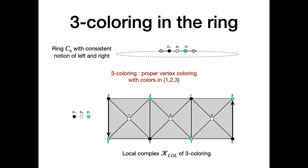We can do the same for tricoloring the ring. Assuming a consistent notion of left and right, tricoloring means properly coloring nodes with colors in {1, 2, 3}. The local complex of tricoloring has the property that if the center node is colored 1, its neighbors may have colors 2 or 3 — but not 1. Similarly, if the center node is colored 3, its neighbors can be colored 1 or 2 but not 3.